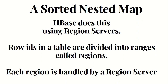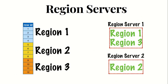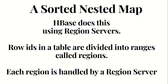HBase does this with the help of region servers. In the case of HBase, the row IDs in a table are divided into ranges called regions, and each region is handled by a region server. You can see on the left side the ranges of row IDs — these are called regions. Region 1 has row IDs from 1 to 4, region 2 has row IDs from 5 to 8, and region 3 has IDs from 9 to 12. Region server 1 is handling regions 1 and 3, while region server 2 is handling region 2.